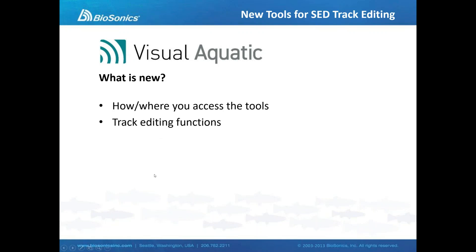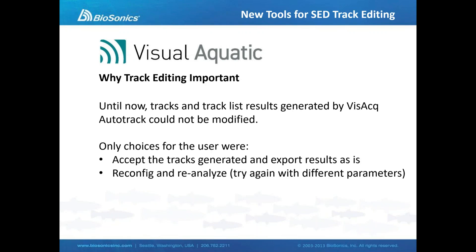Why is track editing important? Until now, AutoTrack would create track lists, but those track lists were fixed — we couldn't adjust or edit them. We had to accept the results that were created automatically. The only way to change the track list would be to reconfigure the analysis and rerun it, and then hope that the track list was more in line with what we desired.